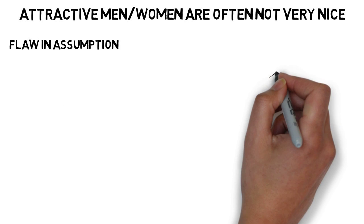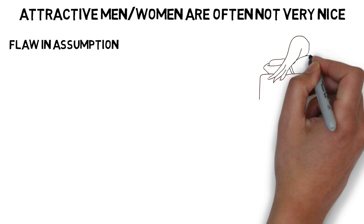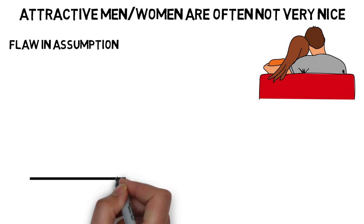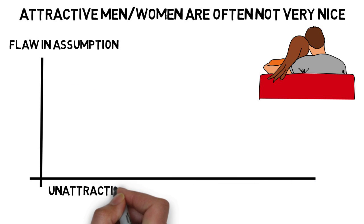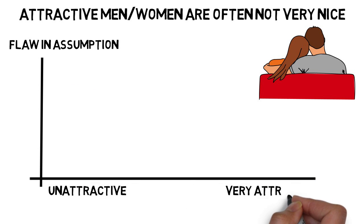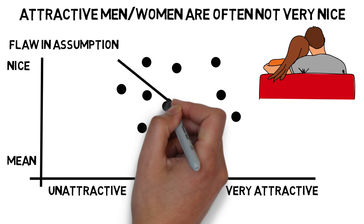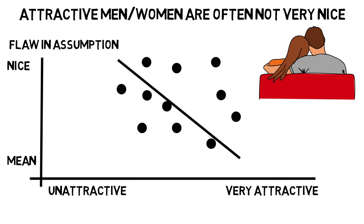Maybe you haven't been on a lot of dates, but maybe you have, and because of that and what you've experienced, you say this saying is definitely valid. If you made a graph of your partners with unattractive to very attractive on one axis versus mean to nice on the other, you might have a lot of data points if you've gone on plenty of dates, and then you can make a trend line which might show that as the person gets more attractive, the trend line goes down in terms of how nice they are.